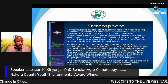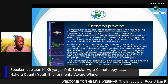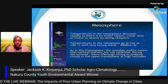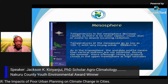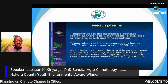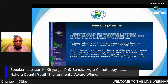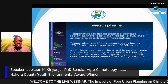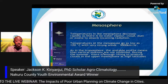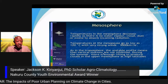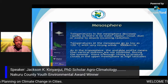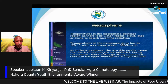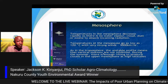The mesosphere is the third layer, where temperatures decrease with increase in height — exhibiting the same characteristic as the troposphere. Temperatures in the mesosphere can go as low as minus 120 degrees centigrade. Temperatures decrease rapidly here because there is no water vapor, no cloud, no dust, or ozone to absorb the incoming radiation.